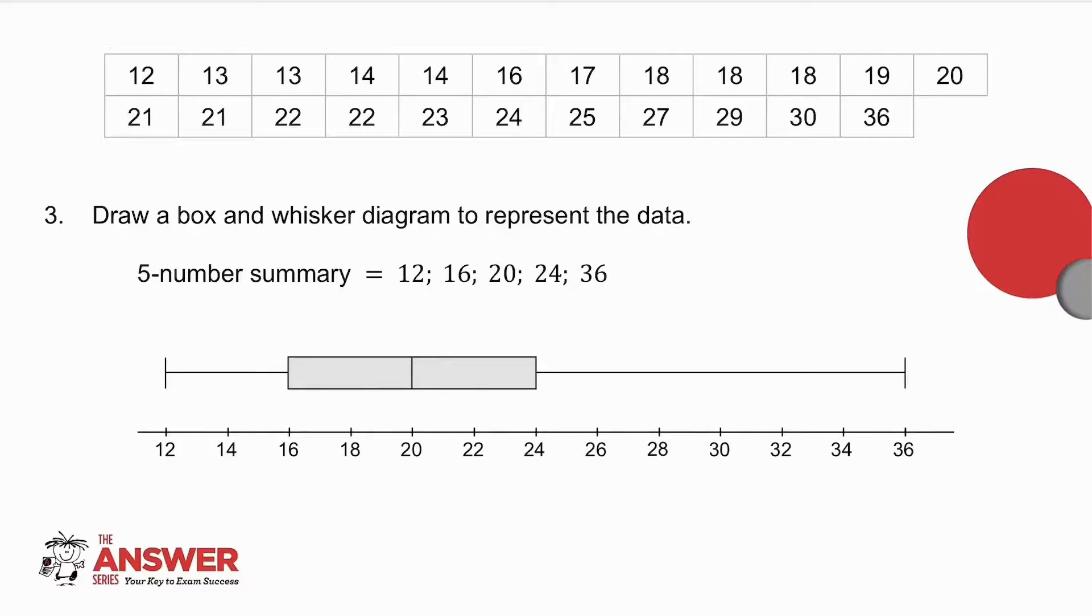Question number 3 asks you to draw a box and whisker diagram. I already have the median, the lower quartile and the upper quartile. All that I now need is the minimum value and the maximum value. And I write those 5 numbers in the correct order. I then plot them on a number line. I draw my box. And then I draw the 2 whiskers.